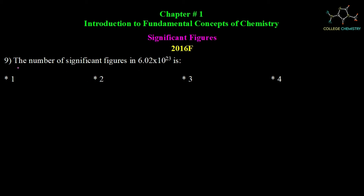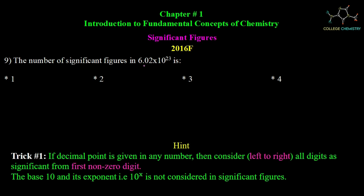Question number 9: the number of significant figures in 6.02 × 10²³. Since a decimal point is present, we consider left to right. There are a total of 3 significant figures in 6.02. In scientific notation, the exponent and its power are not considered as significant figures. So the total significant digits is 3, and the correct option is 3.